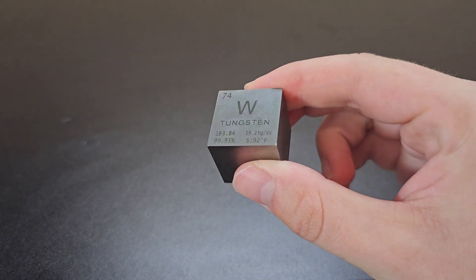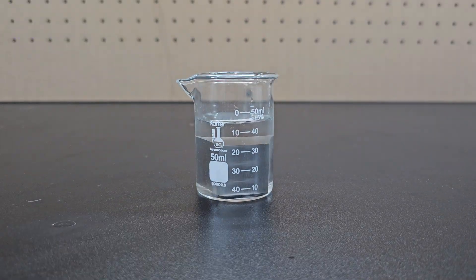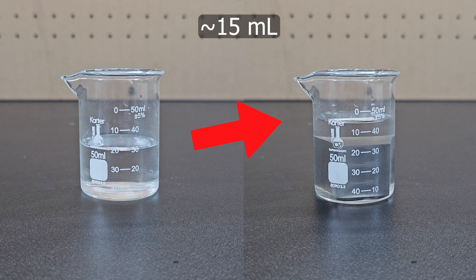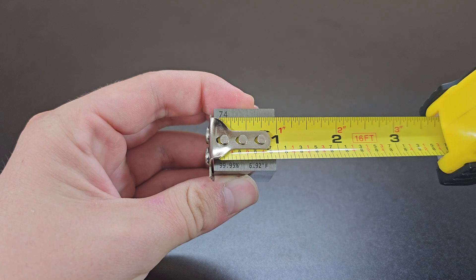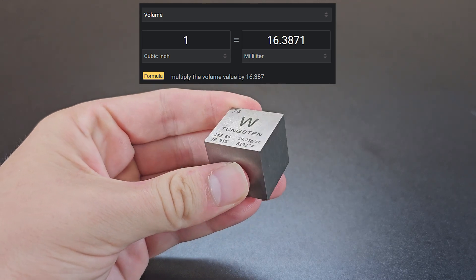This is tungsten, one of the densest elements you can easily buy on the internet. Placing it in a beaker of water, you see a little over 15 milliliters of water is displaced. This makes sense because the volume of one block, which is one cubic inch, is a little over 16 milliliters.